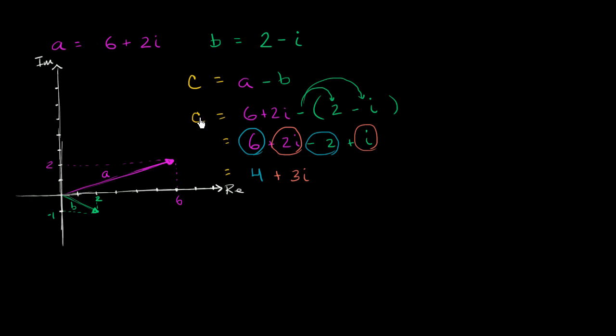Now let's see why that actually makes sense when we visualize A and B as vectors. So this is B, but when we do A minus B, that's essentially the same thing as A plus negative B. So what's negative B going to be equal to? Negative B is going to be equal to negative two plus i. I just multiplied all the terms by negative one.